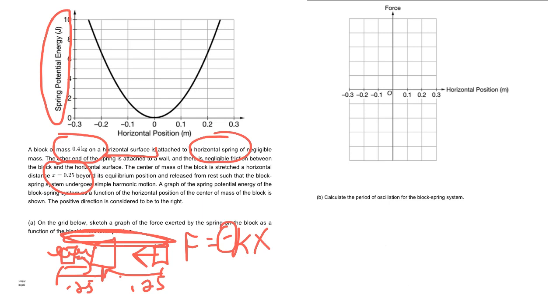So yeah, they're just asking for a sketch. So we don't really need to put numbers here. I do want to calculate that just so you can see how to do it. So remember, our spring potential, US equals 1 half KX squared.